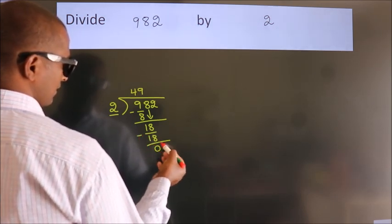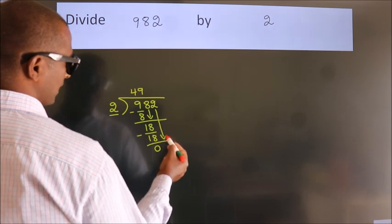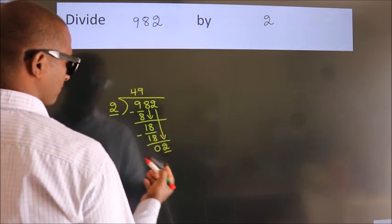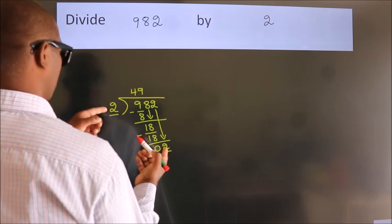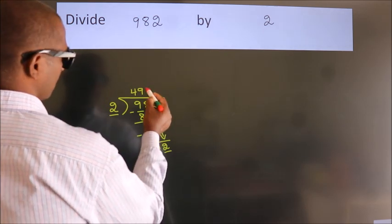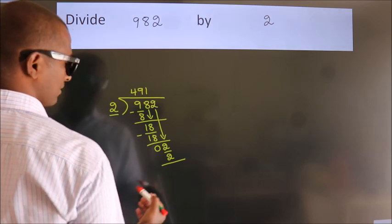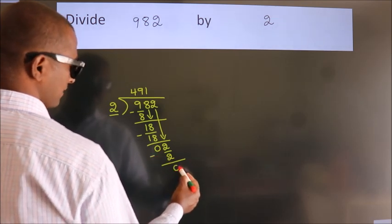After this, bring down the beside number. So, 2 down, giving us 2. When do we get 2 in the 2 table? 2 times 1 is 2. Now we subtract and get 0.